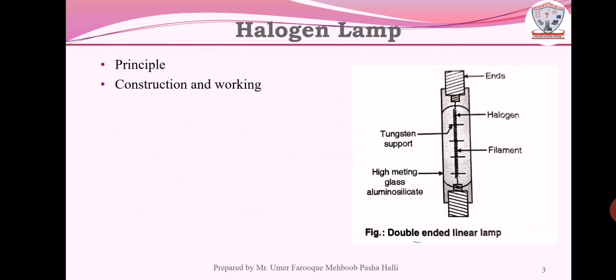First is the halogen lamp. We are discussing the principle and construction of working. The figure shows the halogen lamp with two ends, the halogen filament, tungsten support, and high melting glass. The principle is that the amount of radiation in the visible spectrum increases as the temperature of the incandescent material increases up to 6000 degrees Celsius. Therefore, any suitable material will have radiating efficiency if it has a high melting point. The basic element of this halogen lamp is carbon and tungsten because their melting points are near 3500 degrees Celsius and 3400 degrees Celsius.